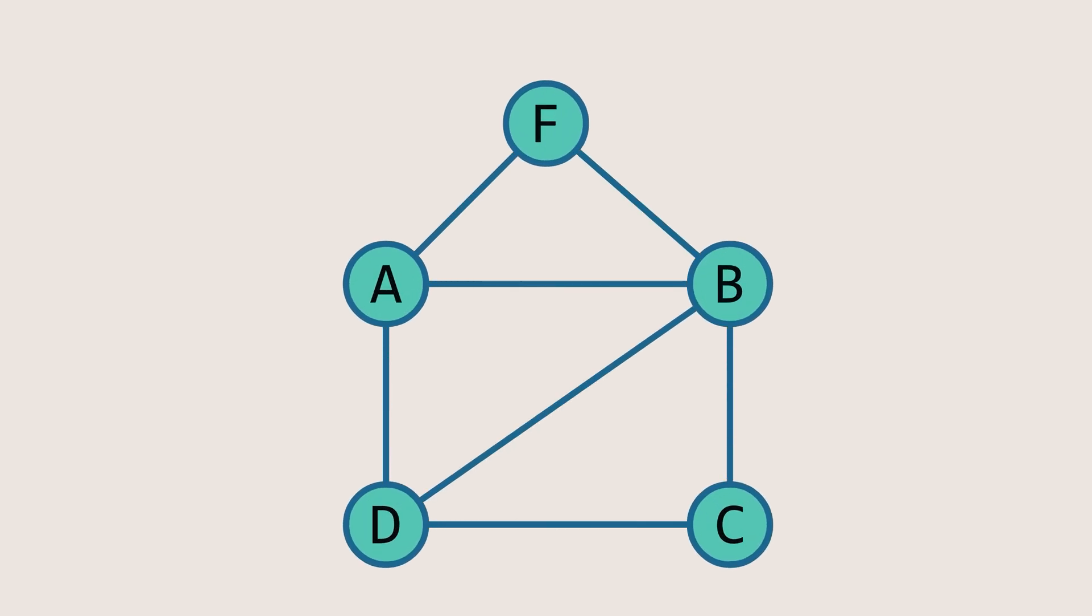A minimum spanning tree is a subset of a graph that connects all the vertices with the minimum possible total edge weight. It ensures the graph remains connected and contains no cycles.